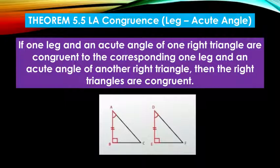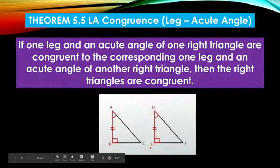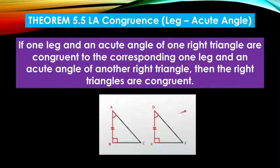For leg acute angle theorem, if one leg and an acute angle is congruent to the corresponding leg and acute angle, then the right triangles are congruent. That's why it's called leg acute angle.